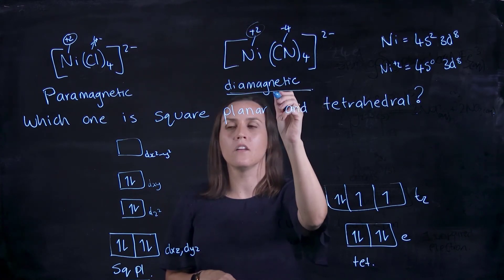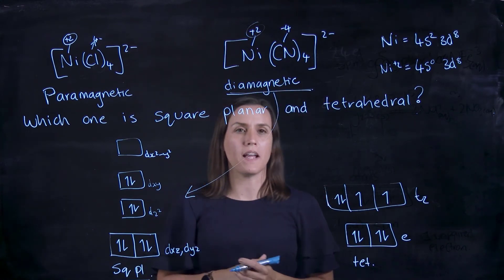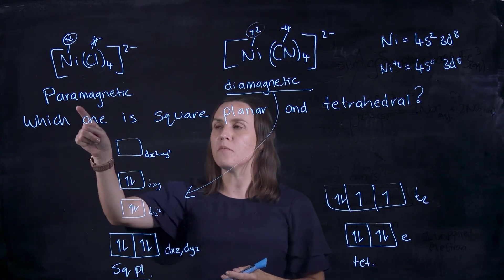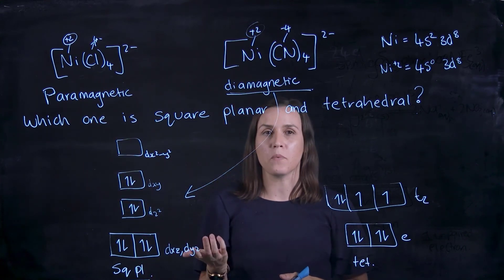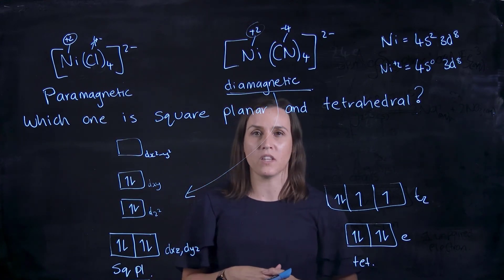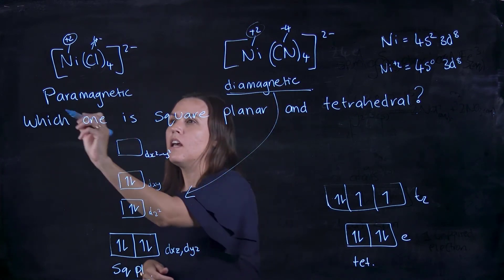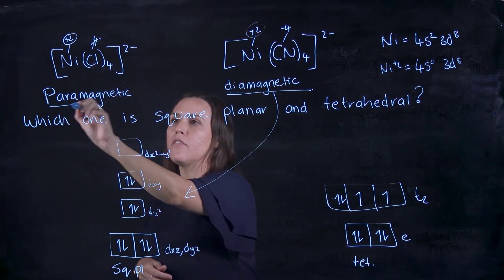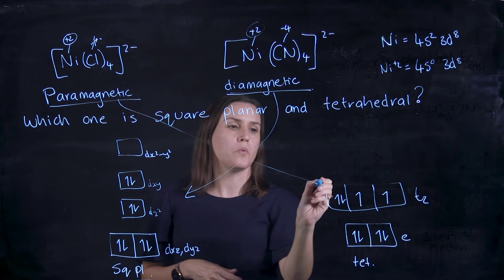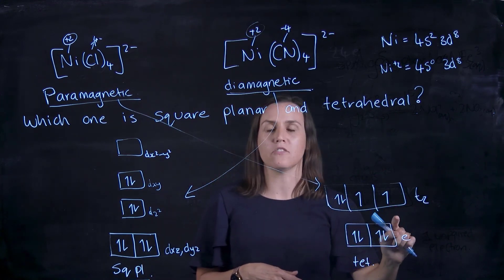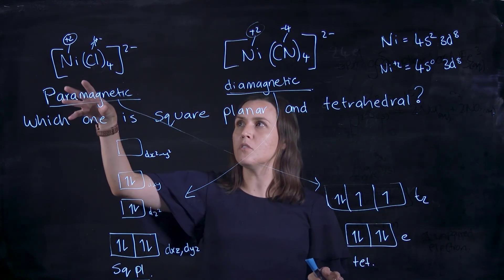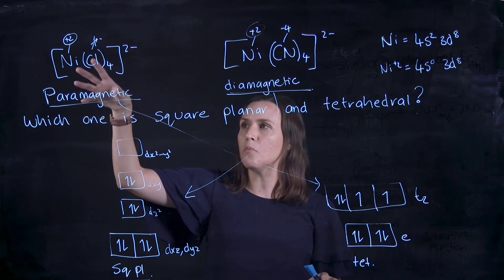So this is indicating that this complex here would be square planar. Paramagnetic is when we have unpaired electrons which can align with a magnetic field, and so therefore we have unpaired electrons in the tetrahedral.